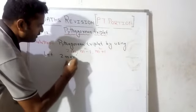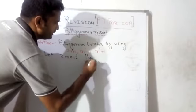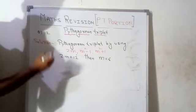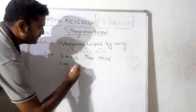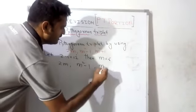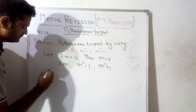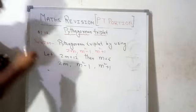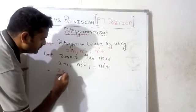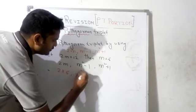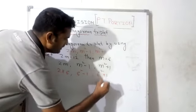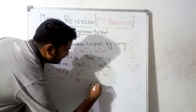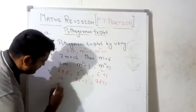Let 2m equal to 12, then m equals 6. Therefore, substituting m = 6: 2m = 2 × 6 = 12; m squared minus 1 = 36 minus 1 = 35; m squared plus 1 = 36 plus 1 = 37.